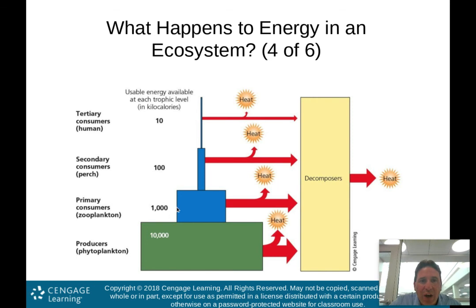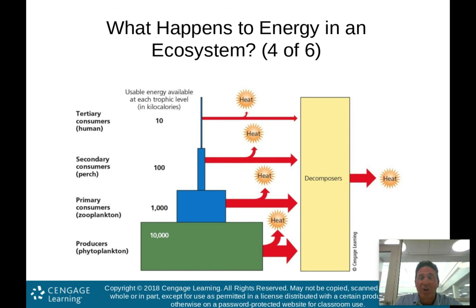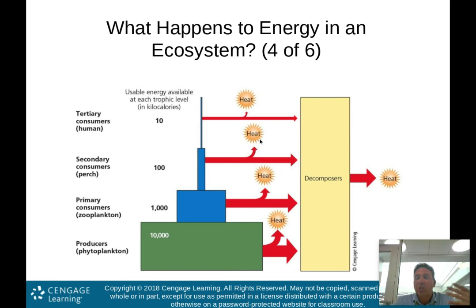So 10,000 times 10% comes to 1,000 kilocalories available for the primary consumers. Then going to the next trophic level — secondary consumers like perch — it's only a tenth of the energy from the previous level. We lose 90% of the usable energy as heat — low-quality, really unusable energy. By the time we get to secondary consumers, we're down to 100 kilocalories.